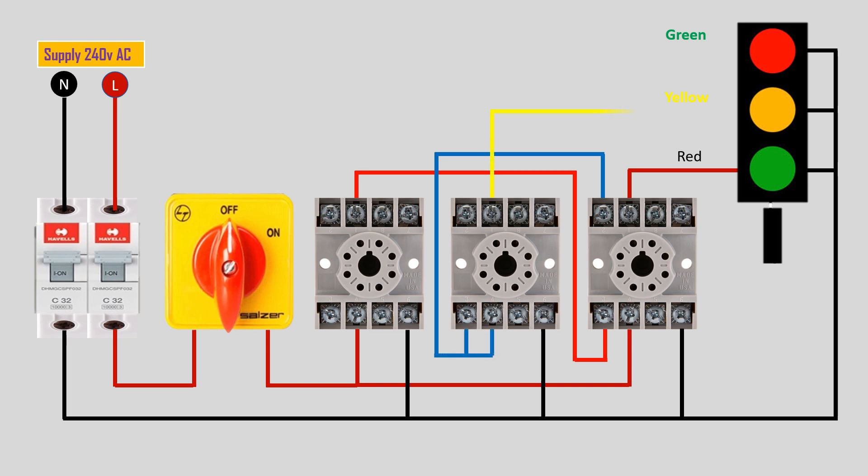The timers are configured in sequence. When you turn on the selector switch: Step 1—Timer 1 activates the green lamp for a set duration.